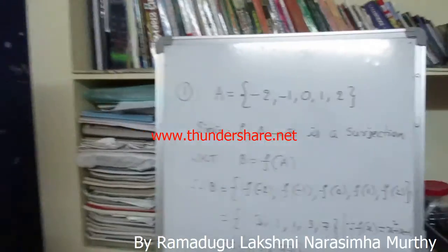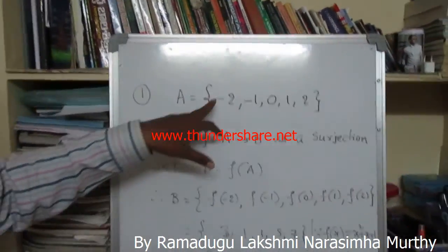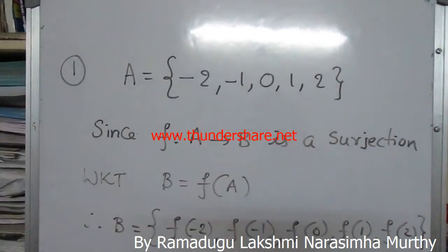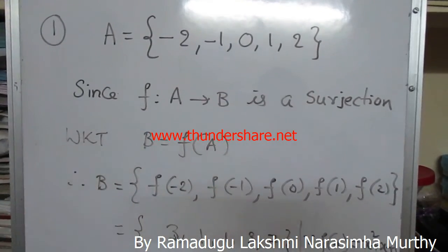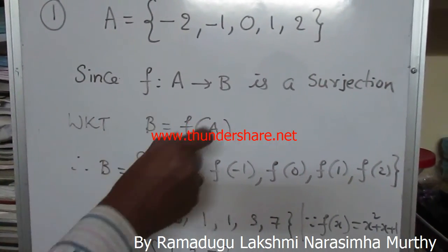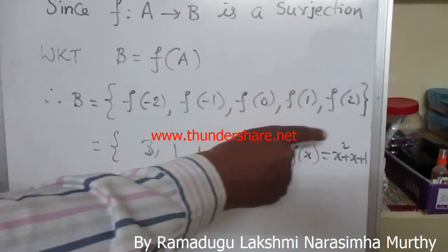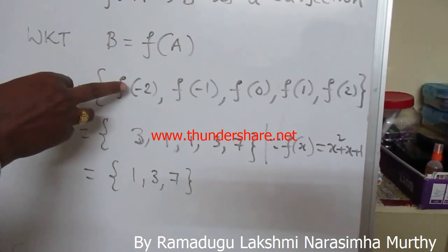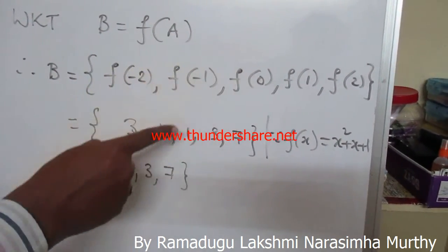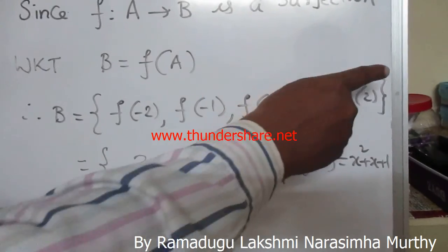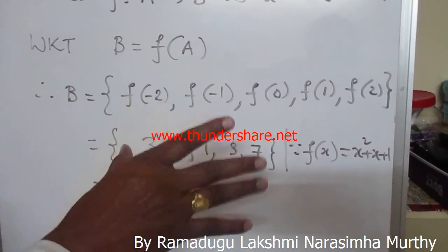The first question: f(x) = x² + x + 1, where A = {-2, -1, 0, 1, 2}. Given that f maps A to B is a surjection, we know that co-domain equals f(A). So B = {f(-2), f(-1), f(0), f(1), f(2)}. We get f(-2)=3, f(-1)=1, f(0)=1, f(1)=3, f(2)=7. Since elements should not be repeated in sets, B = {1, 3, 7}.